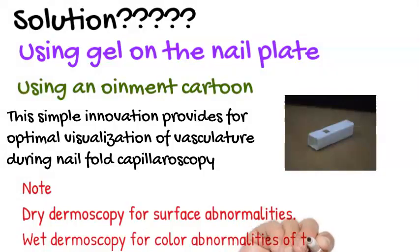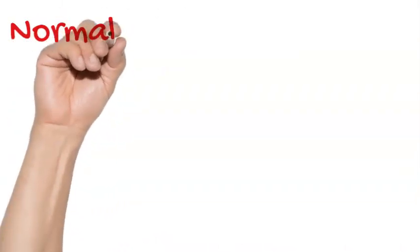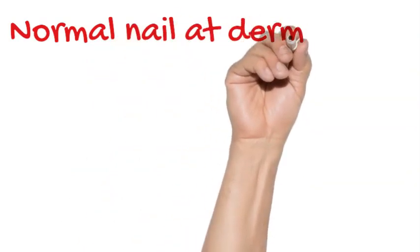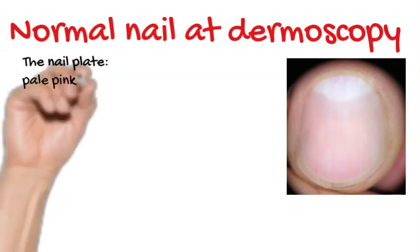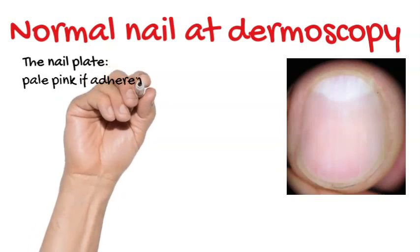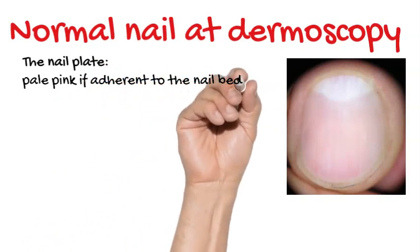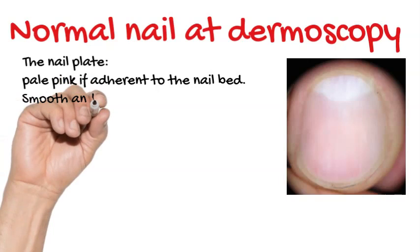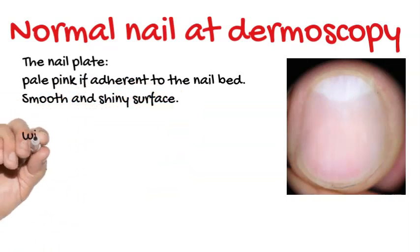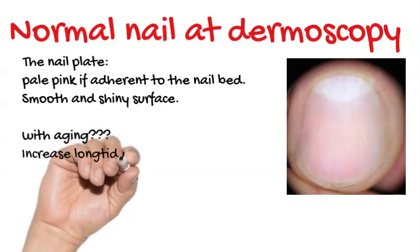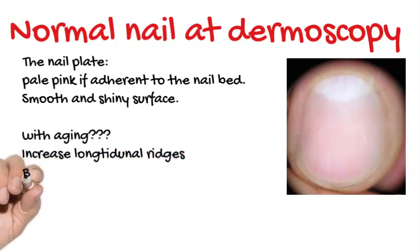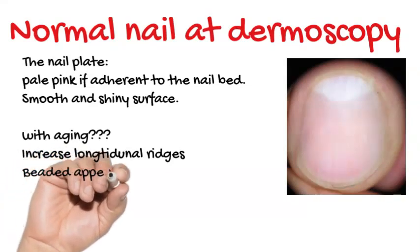Regarding the normal nail at dermoscopy, we must examine the nail plate. It will appear as pale pink if adherent to the nail bed, with a smooth and shiny surface. With aging, there is an increase in longitudinal ridges and a beaded appearance.